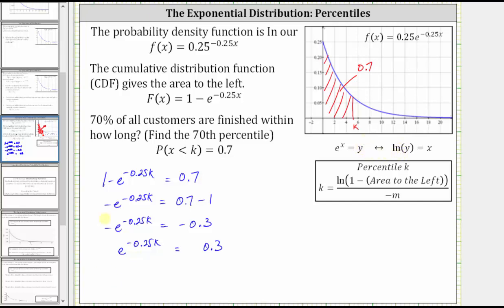So the equivalent log equation is natural log because we have log base e. A logarithm is an exponent, and therefore the log is equal to -0.25k, and the exponential expression is equal to 0.3, which is the number part of the logarithm.